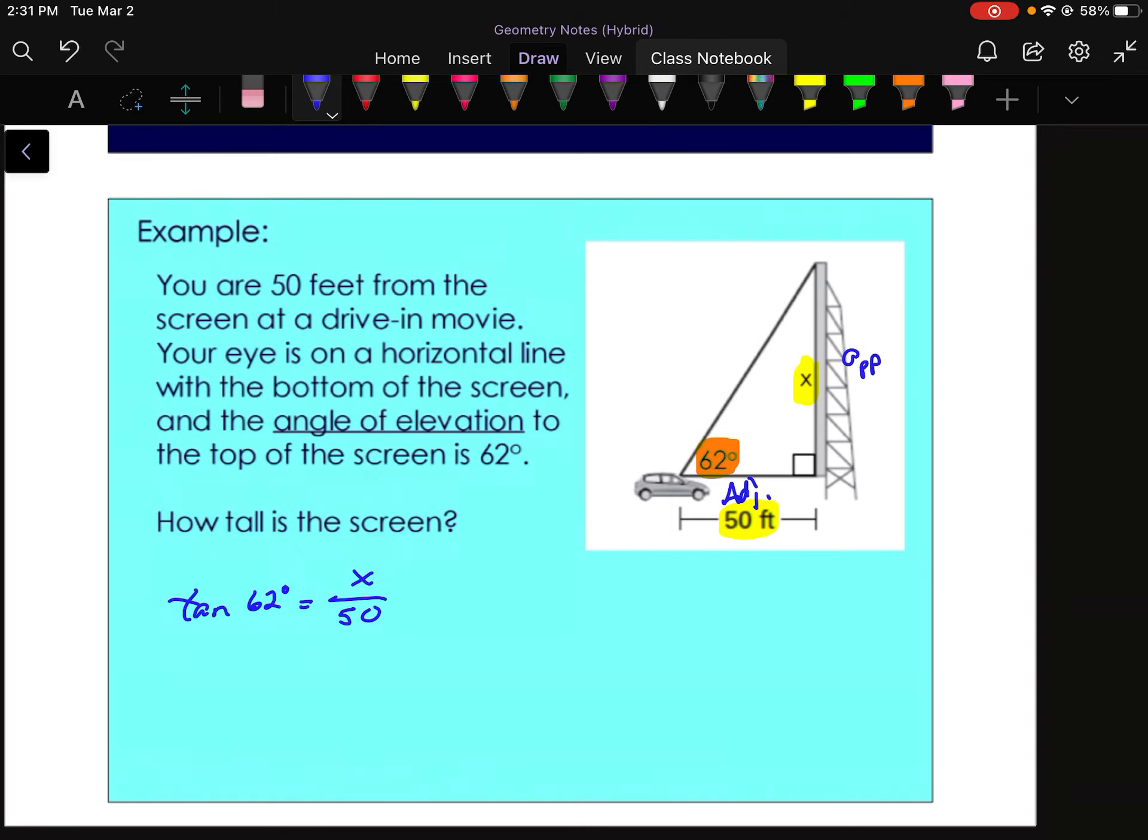So we're solving for a side, which means we do not need inverse trig functions, but what we do need to do is multiply both sides by our denominator. So multiply both sides by 50. That will cancel out the denominator of that fraction. And then we're left with 50 times tangent of 62 degrees equals x. So our variable is isolated already, so all we need to do is type in 50 times the tangent of 62, and we get 94.04.